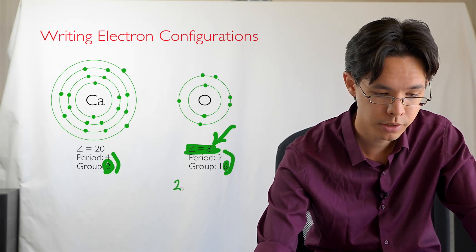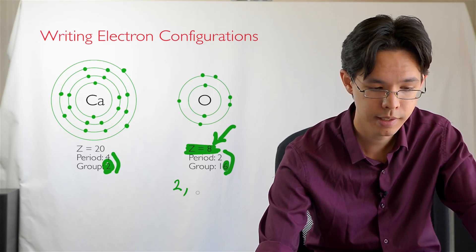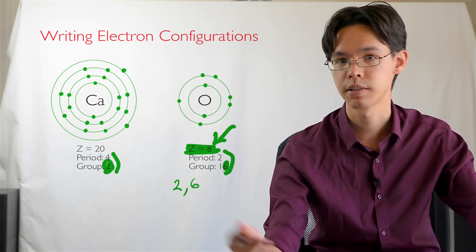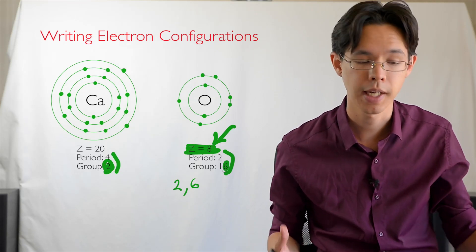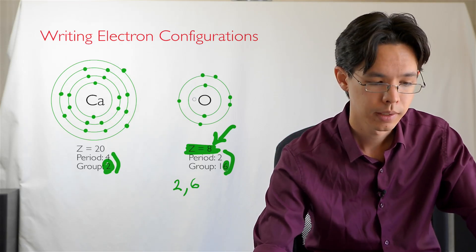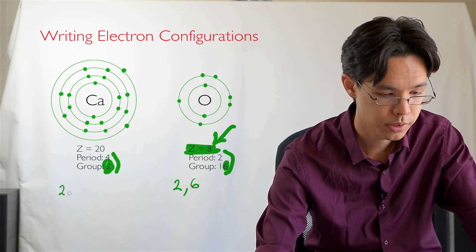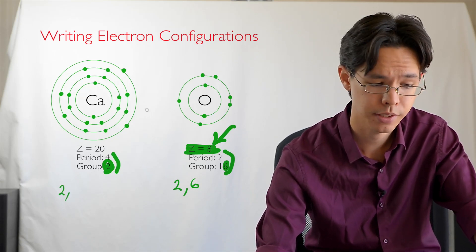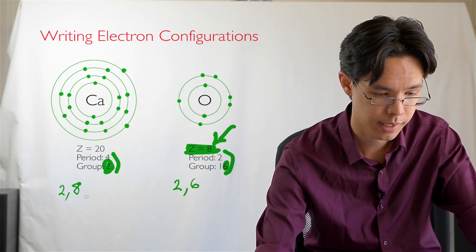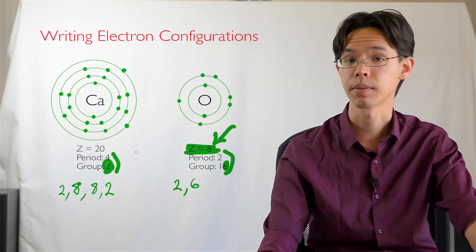Let's look at an oxygen atom here. Well the first shell has two electrons and I separate this with a comma. The second shell has six, so I write the number six. Done. That tells me enough information of where the electrons are located on the oxygen atom. Let's look at the calcium atom here. So the first shell it has two, the next shell has eight, the next shell has eight and the last shell has two. So I can write this as two, eight, eight and two. Very simple.